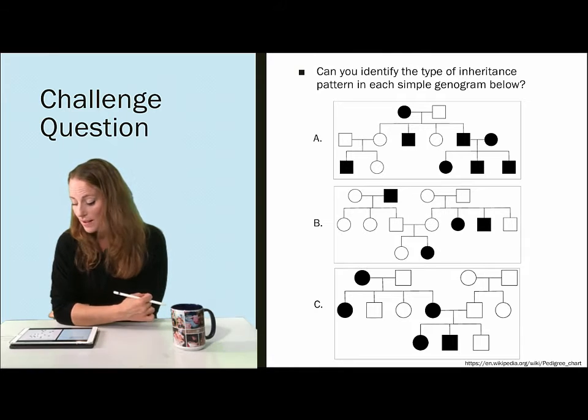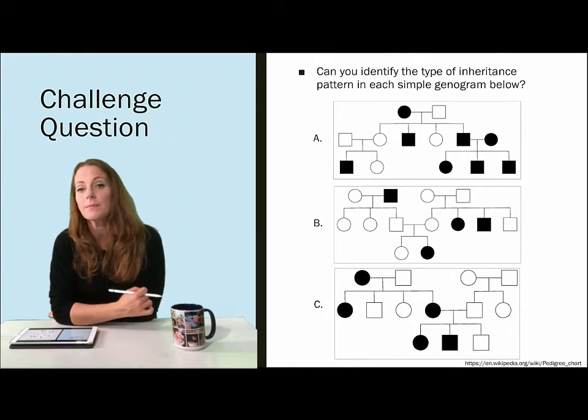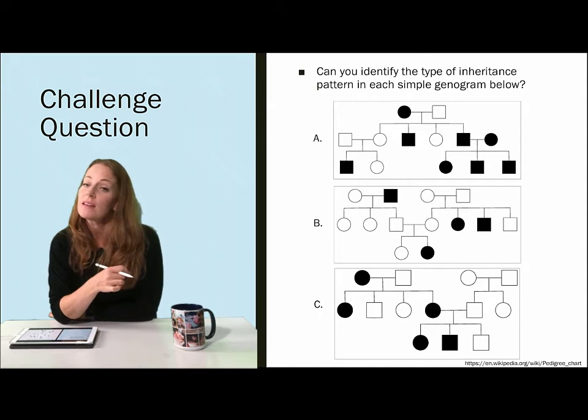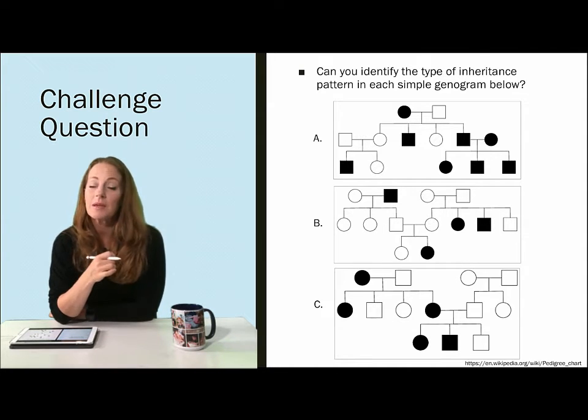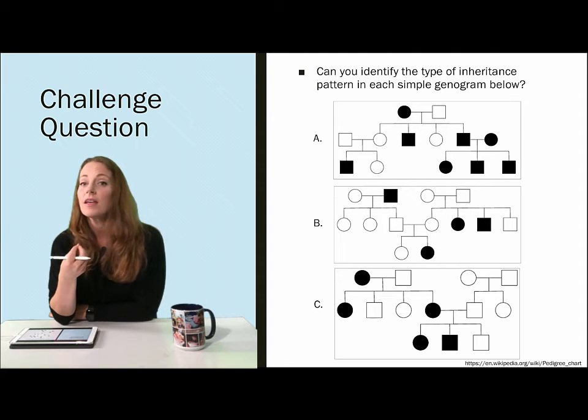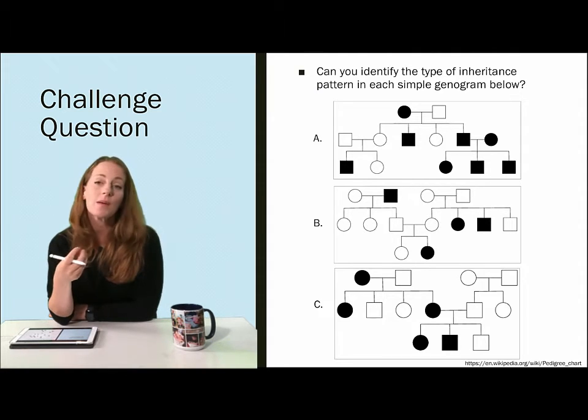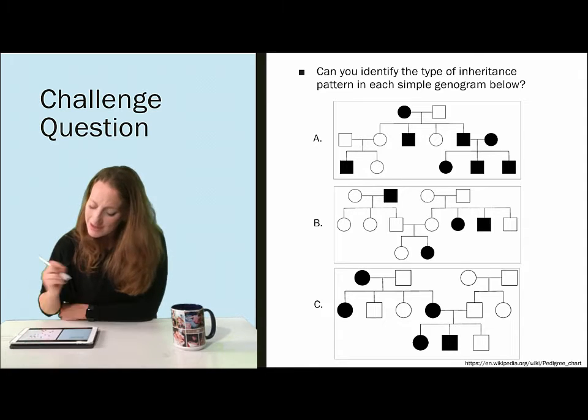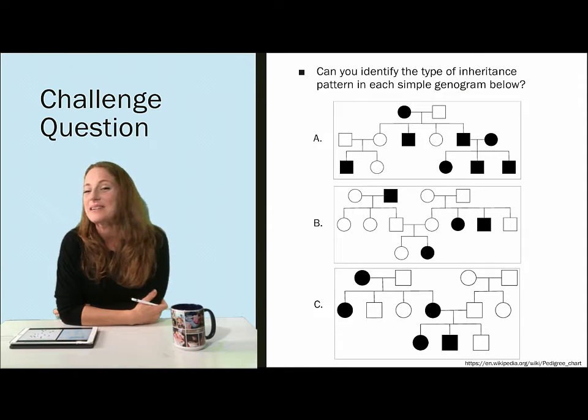In this genogram the circles are for females, the squares are for males, the black or filled in shapes are going to be affected, and the clear or not filled in shapes will be unaffected. So take a look at A, B, and C and see what you think.